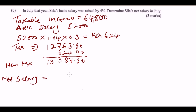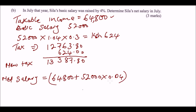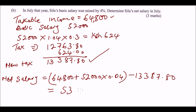To find the net salary, we take the taxable income of sixty-four thousand eight hundred, add the four percent increase on the basic salary of fifty-two thousand (which is 52,000 multiplied by 0.04), then subtract the new tax of thirteen thousand three hundred and eighty-seven point eight zero. The net salary comes to fifty-three thousand four hundred and ninety-two point two zero shillings.